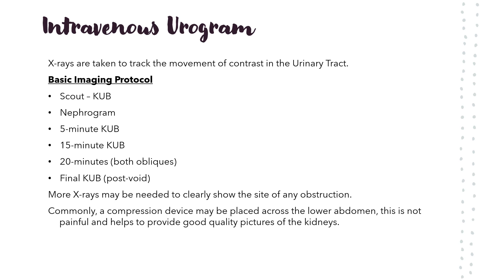How is the IVU done? The patient lies on an x-ray table after the initial scout x-ray of the kidneys and bladder area is taken. Contrast is injected into a vein in the back of the hand or through the arm. The dye passes through the bloodstream into the kidneys, fills the collecting system, and then passes through the ureter to the bladder. A series of x-rays is taken during this procedure.